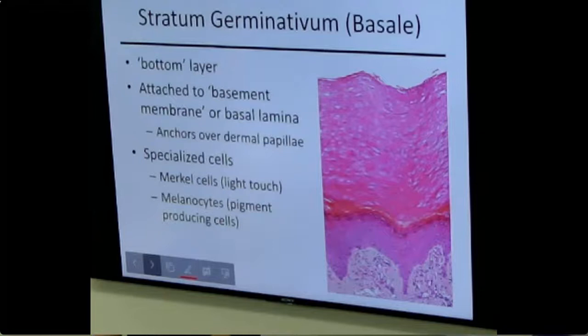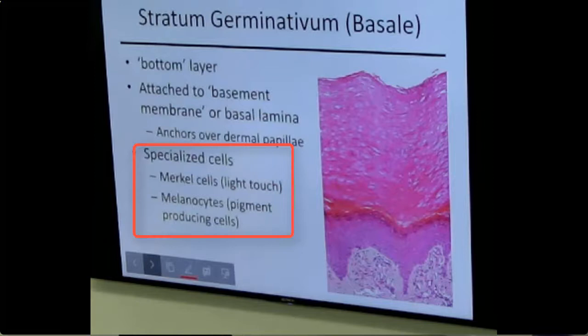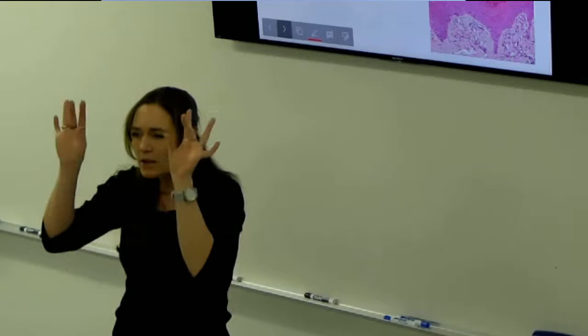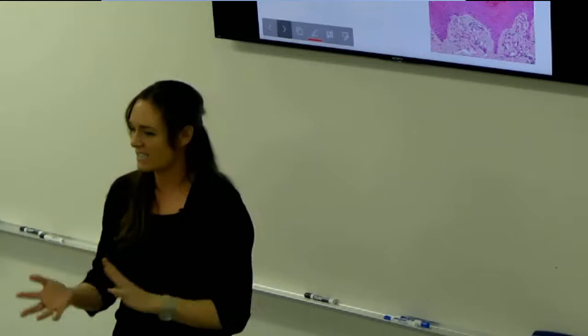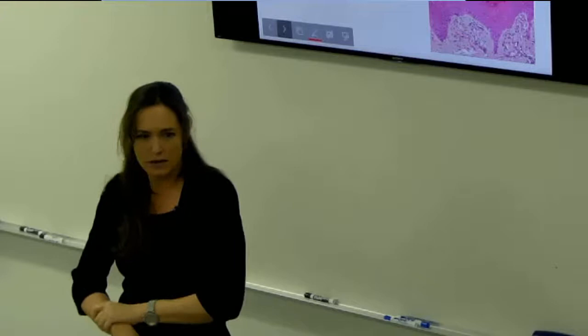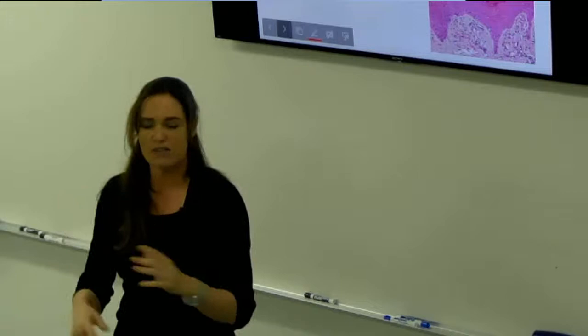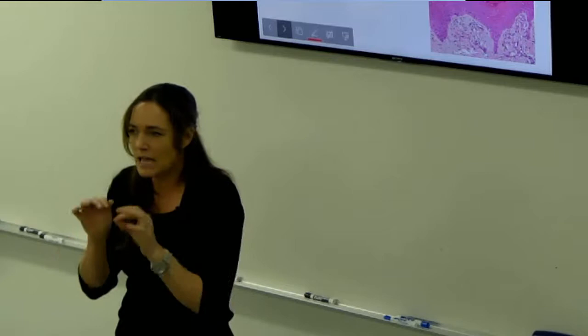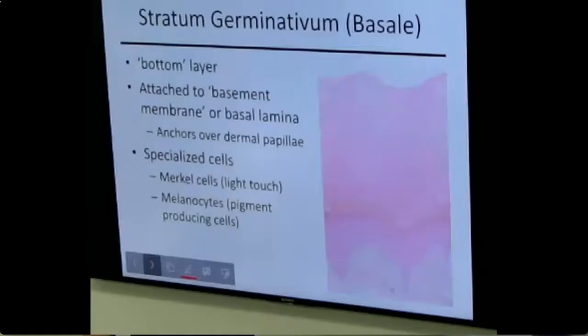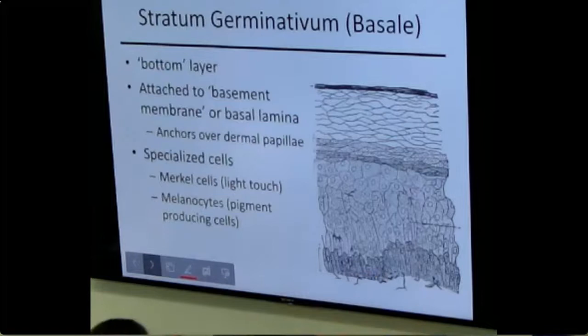Stratum lucidum thickens in areas of high abrasion. The stratum basale is anchored to the basement membrane and dermal papillae. Within this bottom layer we find melanocytes — the pigment-producing cells — and specialized nerve endings called Merkel cells, which detect fine touch. These are very superficial, while other sensory nerve endings like pressure or temperature sensors sit deeper in the dermis.